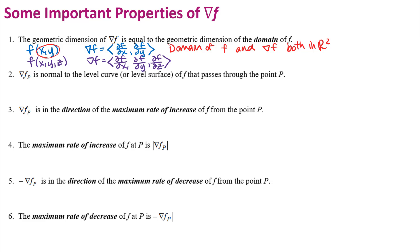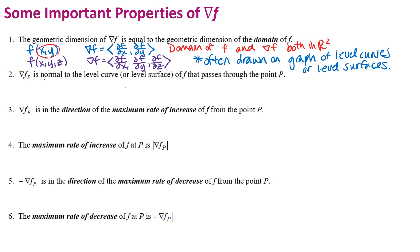Usually that's where you'll see a picture of the gradient vector. This next property relates the gradient vector to level curves or level surfaces. I have uploaded a proof of this property, at least for level curves, into Canvas, so you can look at that. I'm not going to go through the proof here, but I do want to talk a little bit about how you might prove something like that.